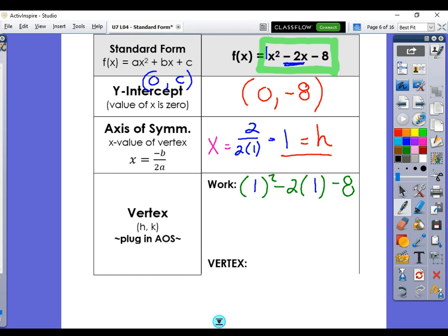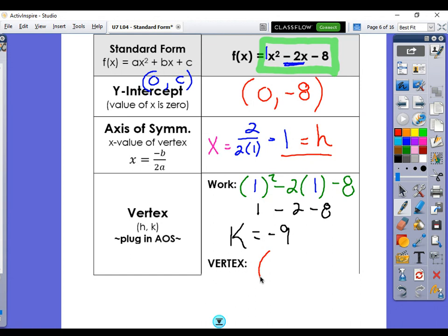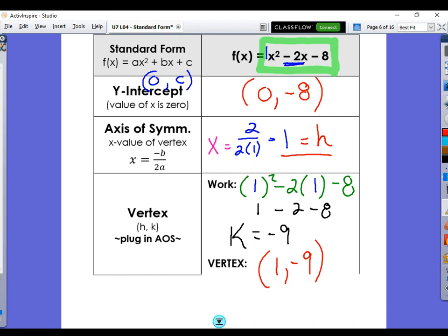So I'm just plugging 1 back into the equation. And as long as you can do order of operations, middle school stuff, you should be fine. 1 squared is still 1. Negative 2 times 1 is negative 2. So I have 1 minus 2 minus 8, which gives me negative 9. So what I just found was k. That number when you plug it in gives you k. So my vertex is 1, negative 9.